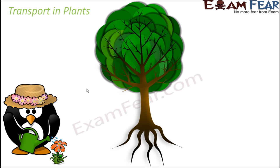What do plants need? Some of the things that plants need are water. If you stop watering the plants in your garden for a few days, the plants start drying up and can eventually even die. So water is one thing needed by plants. Food is another thing needed by plants, and that is why they undergo the process of photosynthesis to prepare their food.